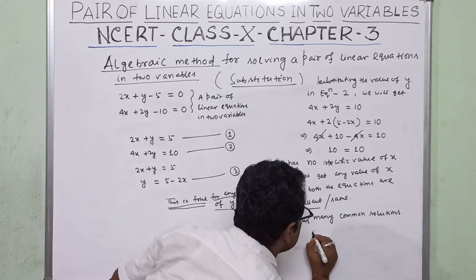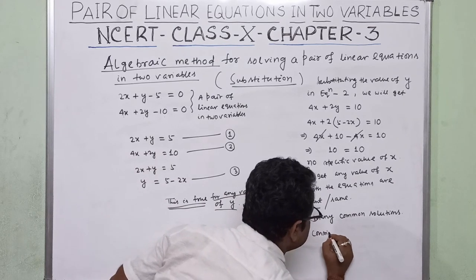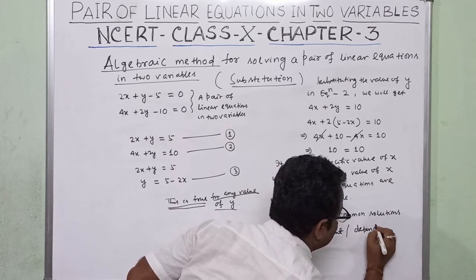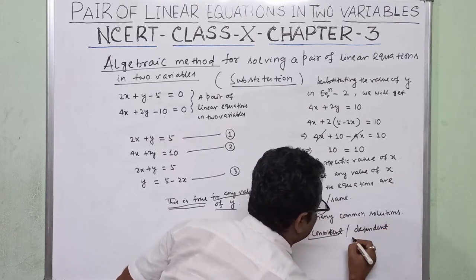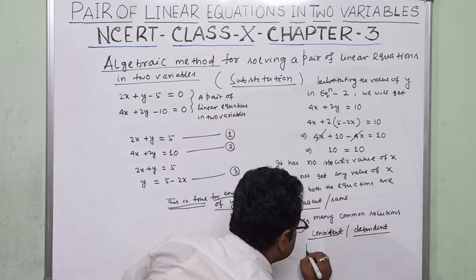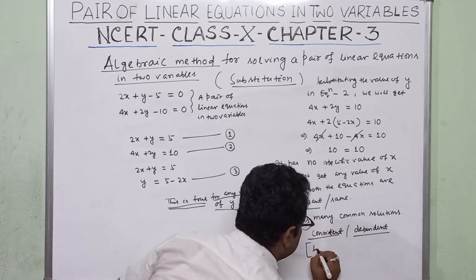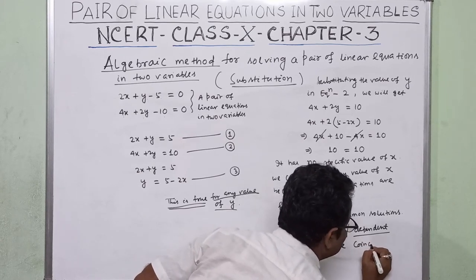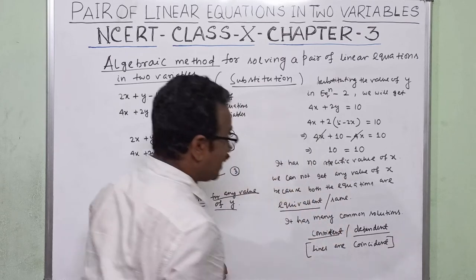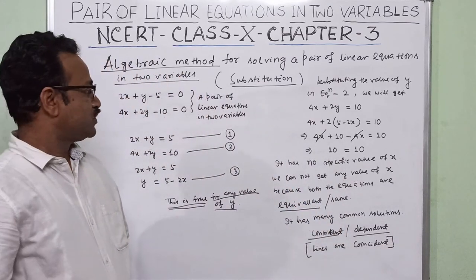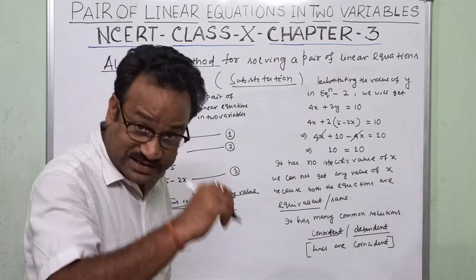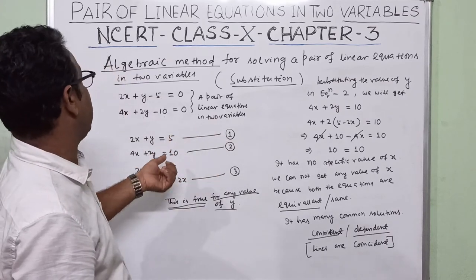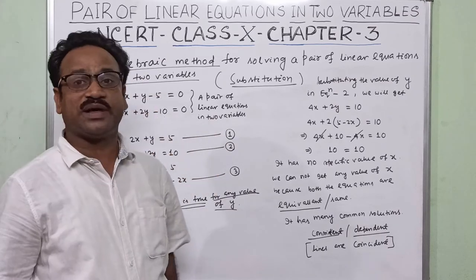It has many common solutions, so these are consistent and dependent. We can say the lines are coincident. So we will give another example to learn more about the pair of linear equations in two variables.